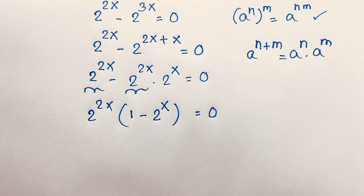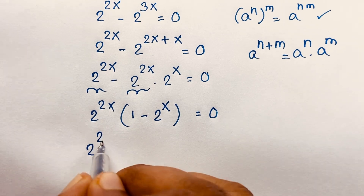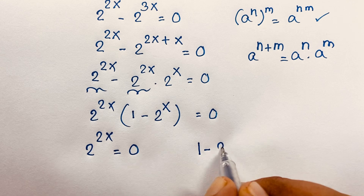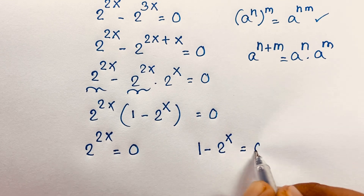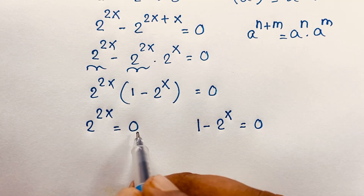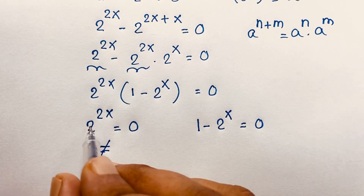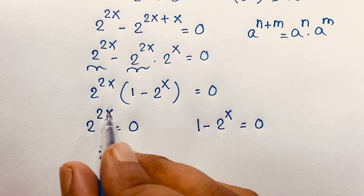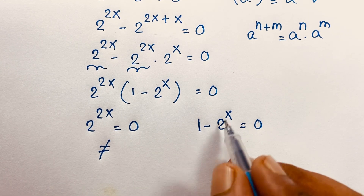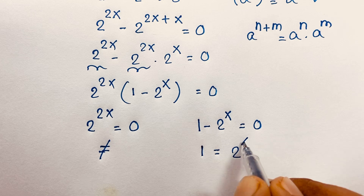Now we will find two cases. Our first case is 2 to the power 2x is equal to 0. In the other case, 1 minus 2 to the power x is equal to 0. Now, 2 to the power 2x is equal to 0 is not possible, because any number to a power cannot equal 0. But here, 1 minus 2 to the power x gives us 1 is equal to 2 to the power x.